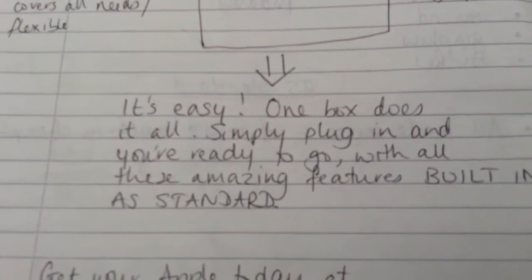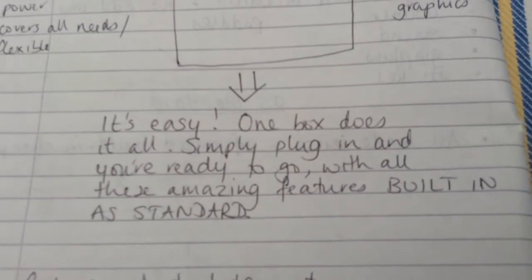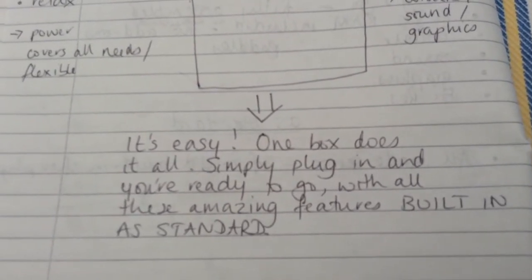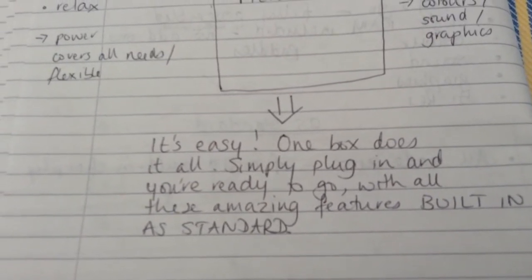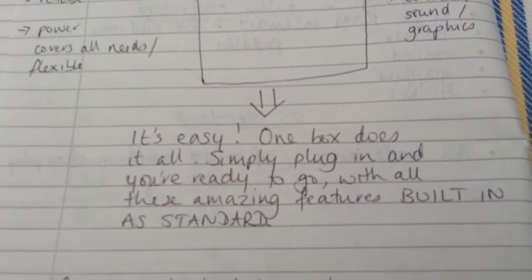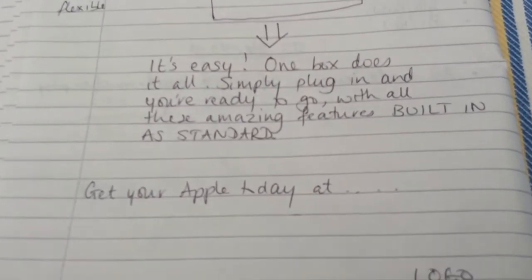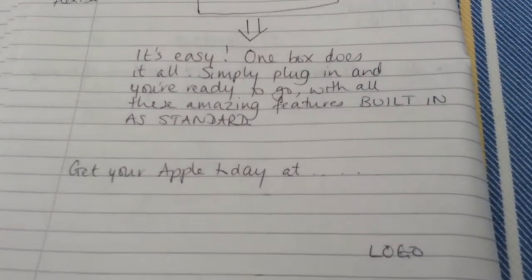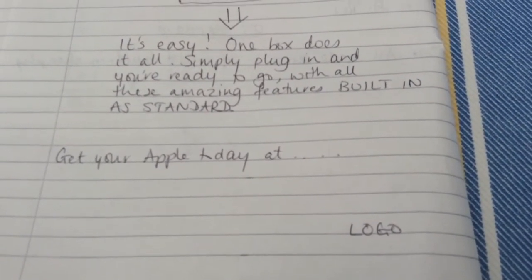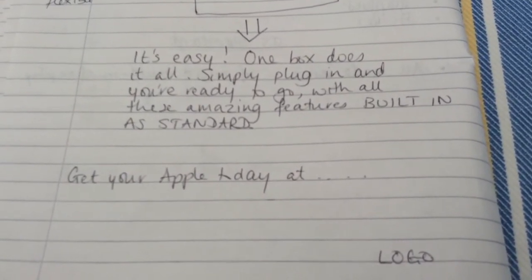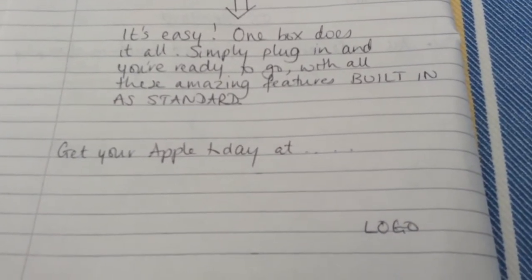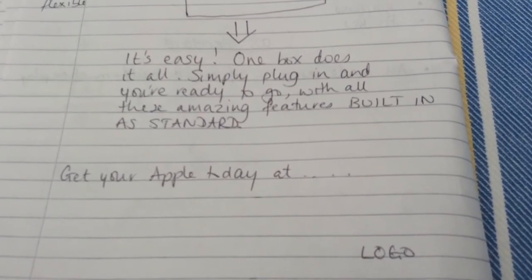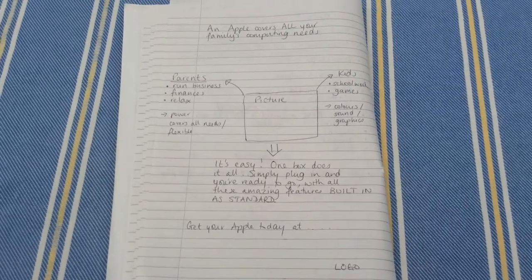For everybody, the main features are: it's easy to use, one box does it all, simply plug in and you're ready to go with all these amazing features built in as standard. That was what I decided to concentrate on — one of the new things about this computer was that everything was standard and ready to go. Underneath that I'd have all the nitty-gritty detail: where you can get your Apple, terms and conditions, and a logo for product recognition. Have a look at the Apple logo on the 1977 adverts — how is it different from the Apple logo today? It's still recognizable, though the 1977 one is a bit more colorful.